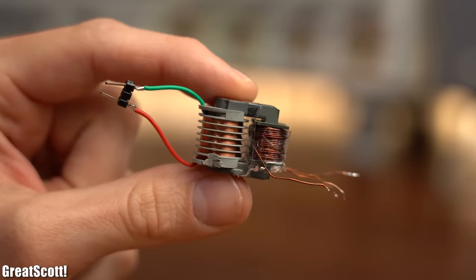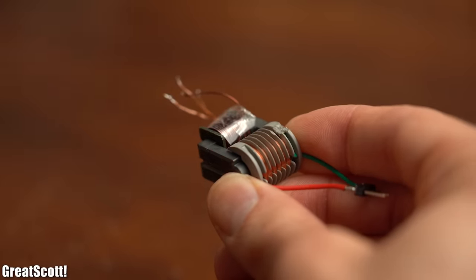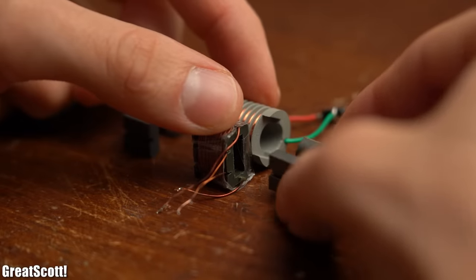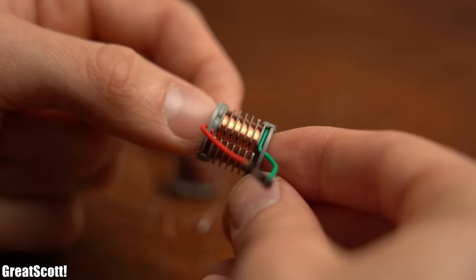First off, let's have a closer look at the transformer. After removing the adhesive tape, it was clear that its ferrite core consists of two pieces that hold two primary windings and one secondary winding.